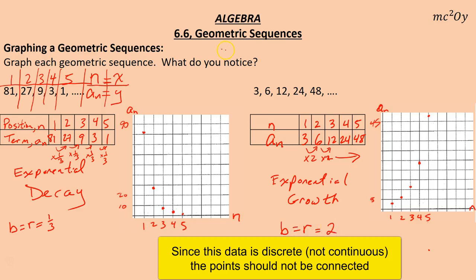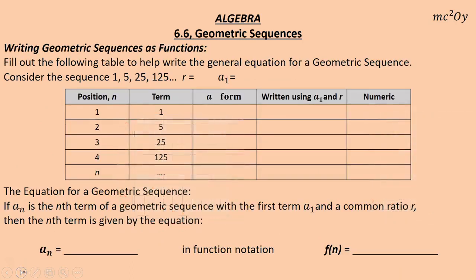So what do you notice? These are exponential functions, and that's all a geometric sequence is — they can be written as exponential functions. What we want to be able to do is quickly write an exponential function in a form that's easily understood in relation to y equals a times b to the power of x. Let's fill out this table to help make that connection.